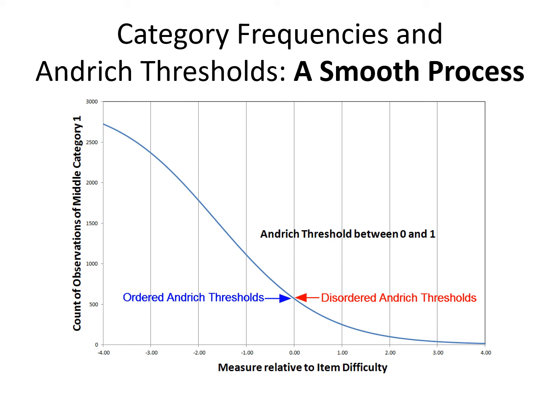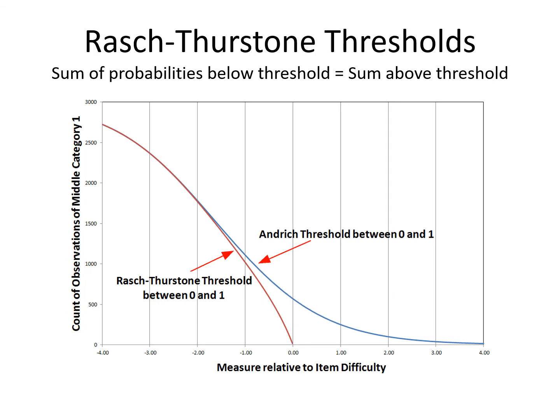We can contrast these thresholds with the Rasch-Thurston thresholds. The Rasch-Thurston thresholds and the Andridge thresholds track together down the left-hand end, but then the Thurston thresholds never disorder, and as the count in the central category goes to zero, their gap goes to zero. For those not familiar with the Rasch-Thurston thresholds: they are where the sum of the probabilities of the categories below the threshold equals the sum above the threshold, as opposed to the Andridge thresholds, which is strictly for the category above or below its threshold. What we're pointing out here is that the process of category frequencies against Andridge thresholds is smooth and doesn't depend on any change in the nature of the categories — it just depends on the category frequencies.